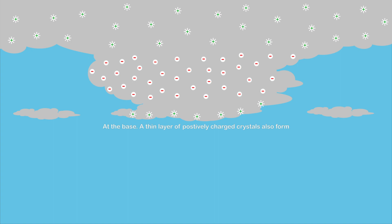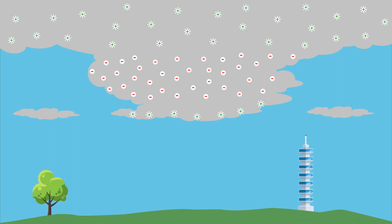As they fall, the hail picks up negative charge by rubbing against tiny positively charged ice crystals. A negative charge forms at the base of the cloud where the hail collects, while the lighter ice crystals remain near the top of the cloud and create a positive charge. Now objects on the ground, like steeples, trees, and our planet itself, become positively charged.